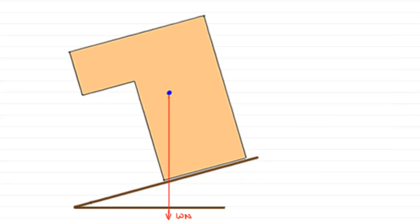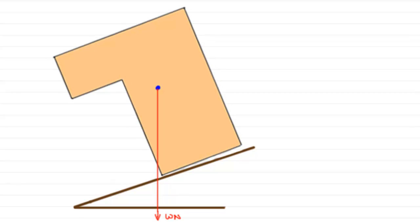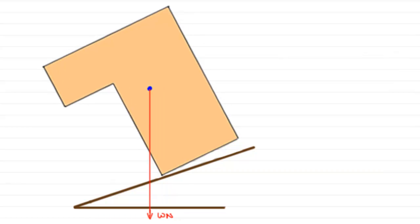And as we raise it higher, you can see that at this point here, the line of action of W passes through this point here. And at this point, there's no turning effect about this point, no moment. And so this lamina is very unstable. It's at the point of toppling. Because if this was to be raised by a few more degrees, this would actually start to topple now about that point.